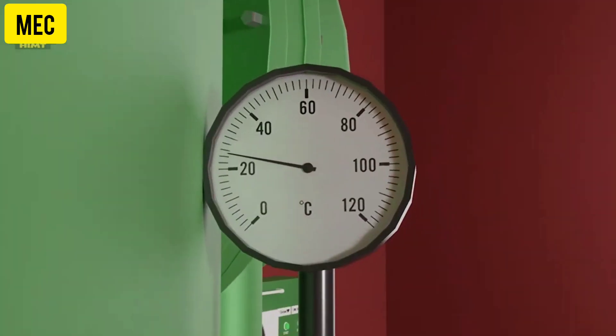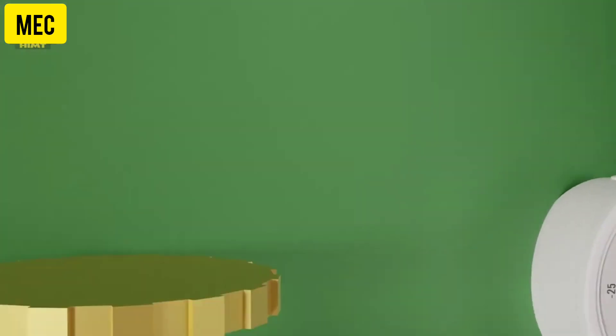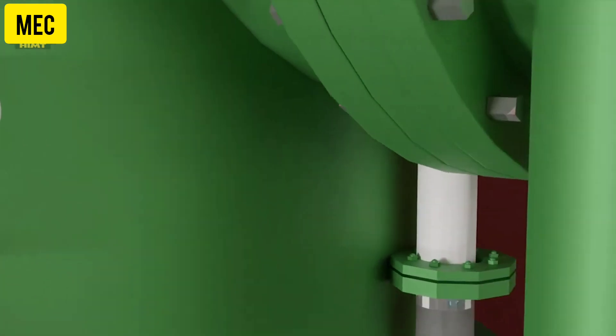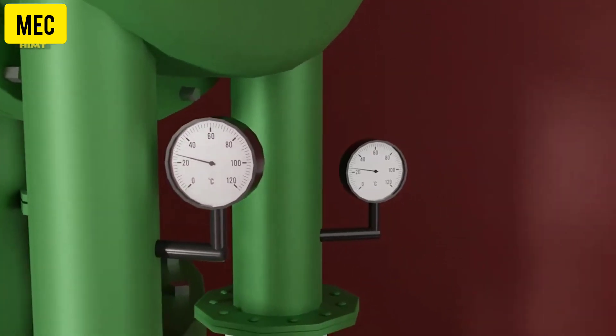This thermometer on the shell measures the temperature of the generator shell, providing insights into its overall thermal conditions. This vacuum gauge on the shell indicates the level of vacuum within the generator, ensuring it remains within the required range. We also have thermometers at the inlet and outlet of the cooling water to the condenser to measure the temperature of the cooling water, aiding in maintaining optimal cooling conditions.